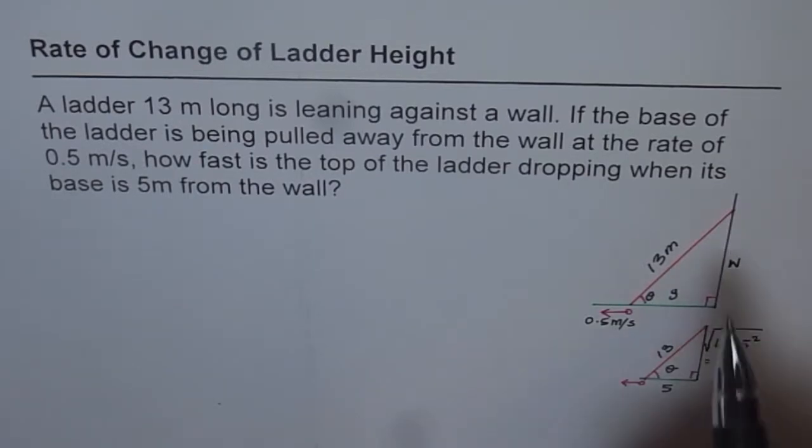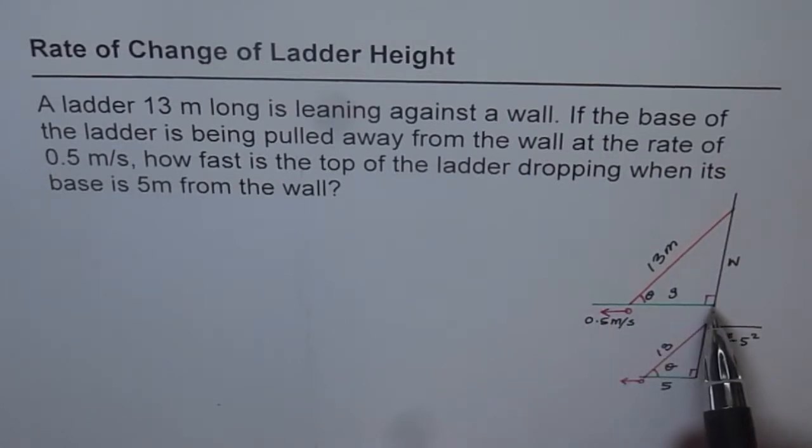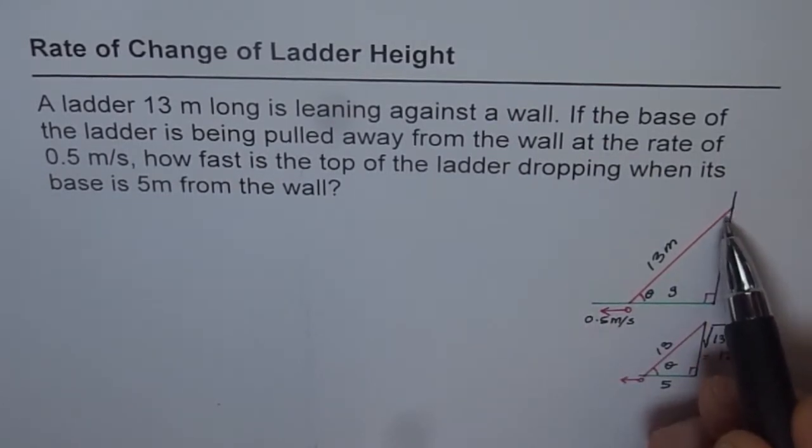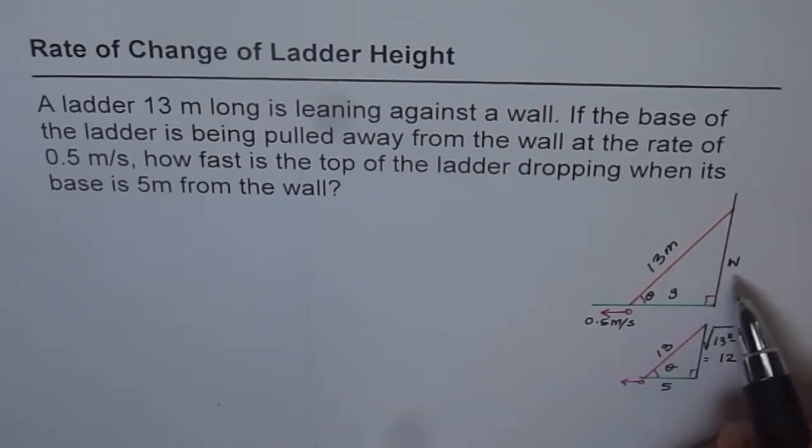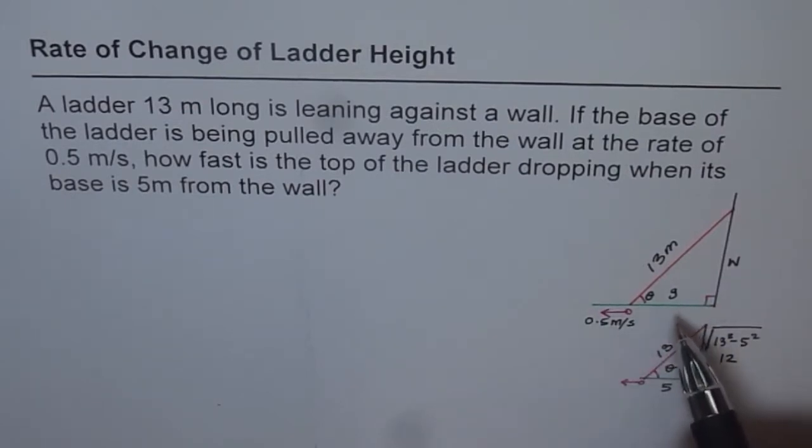I have a diagram here which represents the situation. That is the wall, this is the ground level, and a 13 meter long ladder is leaning against the wall. It makes an angle of theta with the ground. So instead of x and y, this time I am using different variables: G for ground and W for wall. Get used to using different kinds of variables.